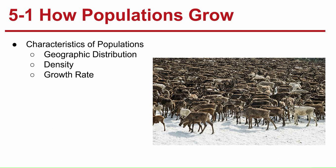There are three main characteristics of populations. The first is geographical distribution, also known as range. This is the area inhabited by a population, and it can vary greatly in size.